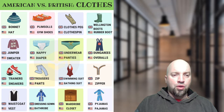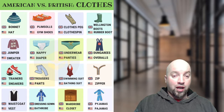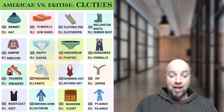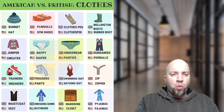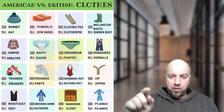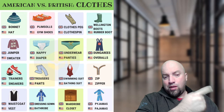The next one is 'clothes pegs' and 'clothes pins.' In Canada we would probably say 'clothes pins,' but what I personally call them is 'clothes hangers.' Next one is 'Wellington boots' and 'rubber boots' — in Canada we would say 'rubber boots.' And Ella says in Australia they would call them 'gumboots' — I have never heard that before, thank you for letting us know.